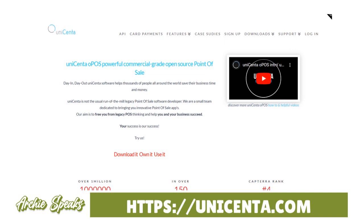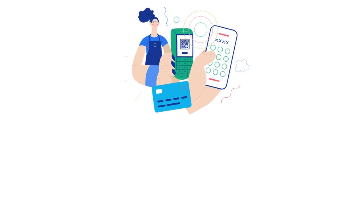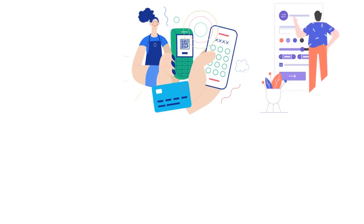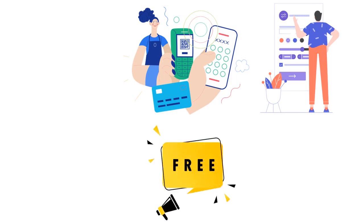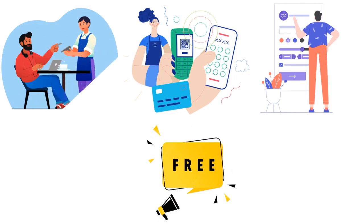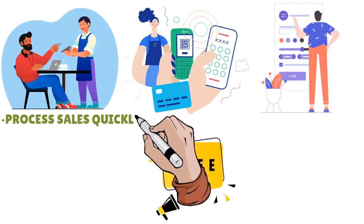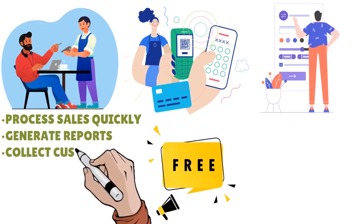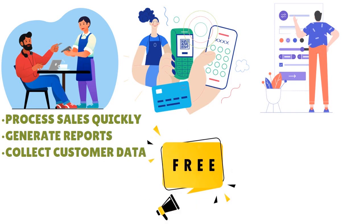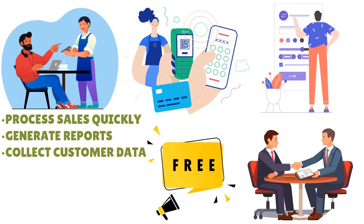You do need some programming background to use Unicentor POS, but it is a wonderful opportunity. What we love about Unicentor is that you can customize things in a very scalable way. It doesn't matter if you're a small business or a large enterprise. Whether you own a bike shop, a cafe, a bar, or a restaurant, this install-based POS system can help you automate inventory management, process sales quickly, generate reports, and collect customer data for marketing. You also have a CRM aspect.